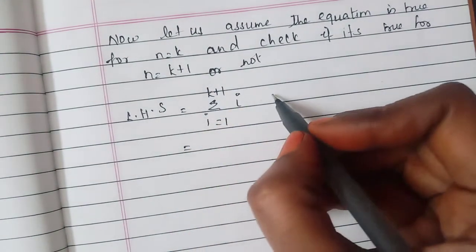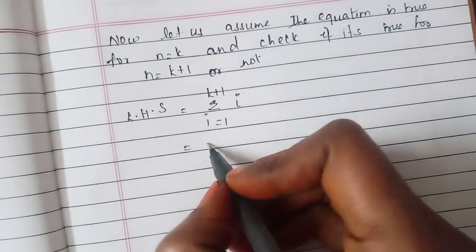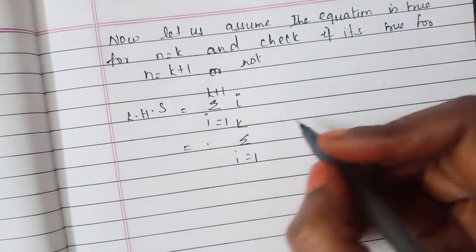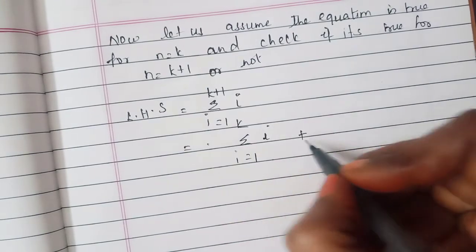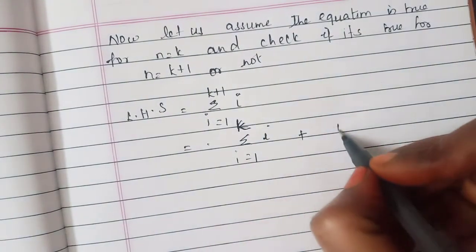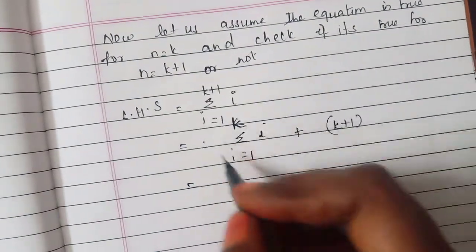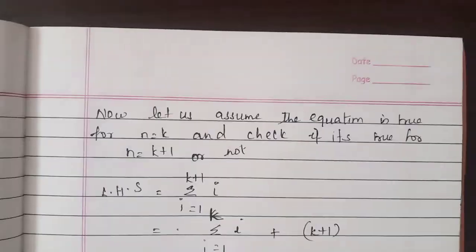So this LHS can be written as 1 to n equals to k. So for this we will have two terms. So we will split it into 2 terms i equal to 1 to k plus up to k you are having one term and k plus 1 so this will be the formula.